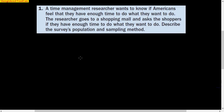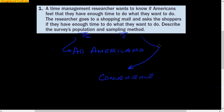So first checkpoint. I would like you to pause the video and describe the survey's population and the sampling method. The population is all Americans. And the sampling method, I would say, would be convenience. Because the researcher just went to a shopping mall. If it wasn't convenience, they'd do a phone survey or a mailing survey across the country.